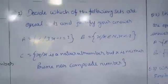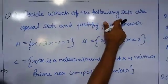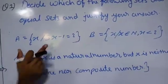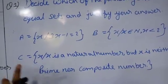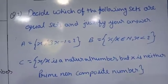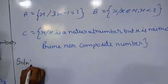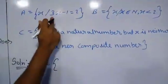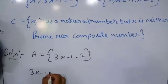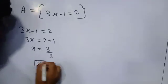Let's move to exercise 1.2, practice set 1.2: decide which of the following sets are equal sets and justify your answer. We have three sets: set A, set B, and set C. Set A is equal to {x such that 3x minus 1 is equal to 2}. Solving: 3x is equal to 2 plus 1, so x is equal to 3 upon 3, which gives x equal to 1. So set A equals {1}.